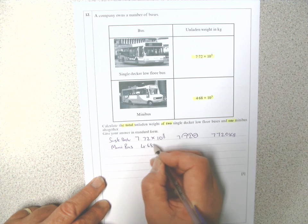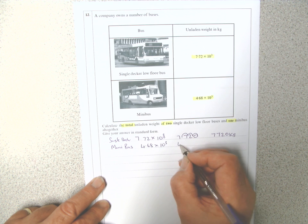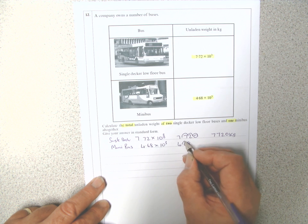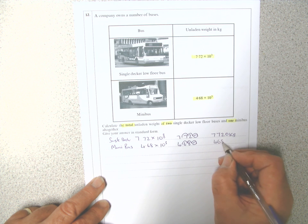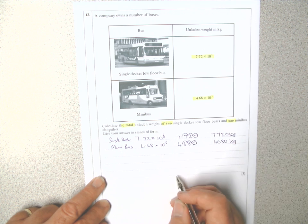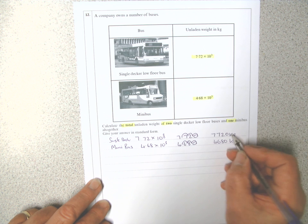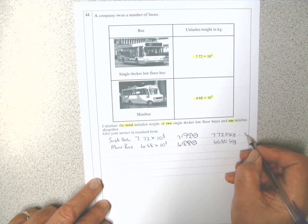For the minibus, 4.68 times 10 to the 3. Move the point three places over, so it's 4680 kilograms. And I need two single deckers, so that's two of them.